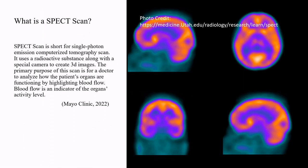SPECT scan is short for single photon emission computerized tomography scan. It uses a radioactive substance along with a special camera to create 3D images. The primary purpose of this scan is for a doctor to analyze how the patient's organs are functioning by highlighting blood flow, which is an indicator of the organ's activity level.